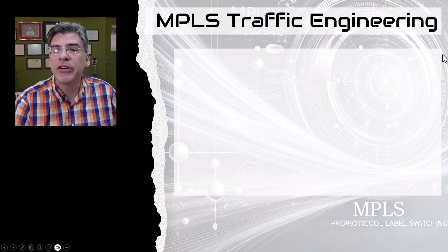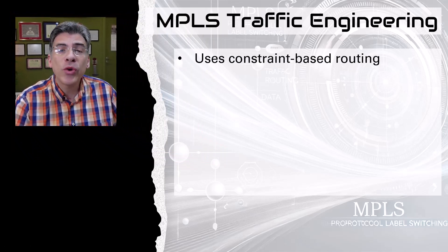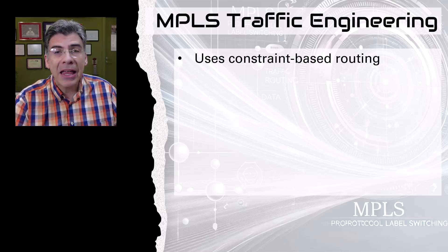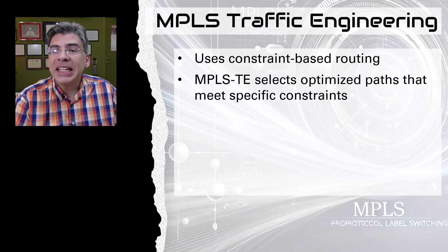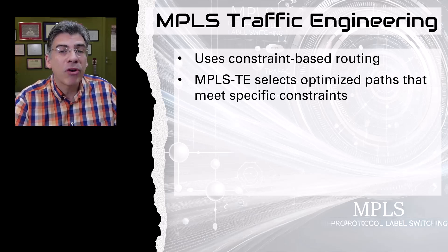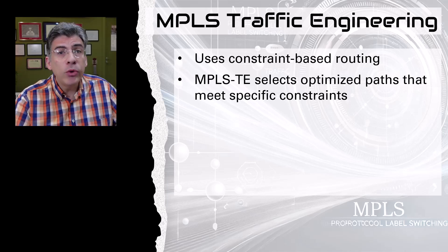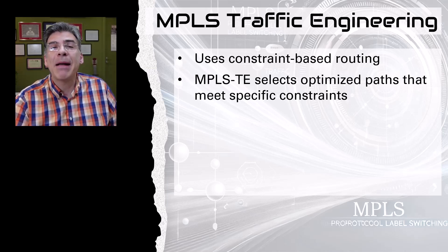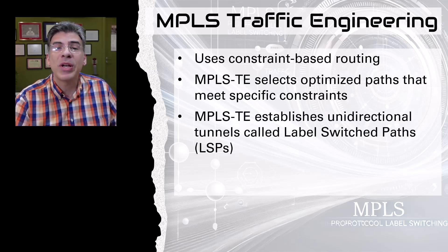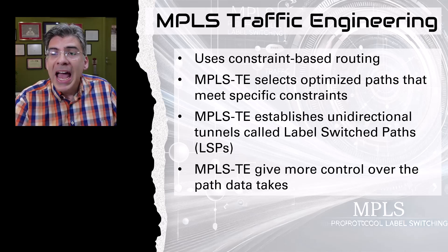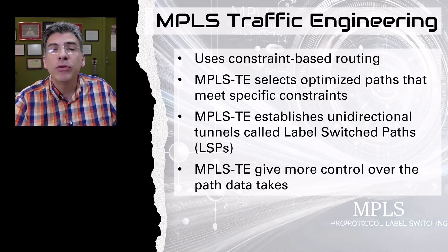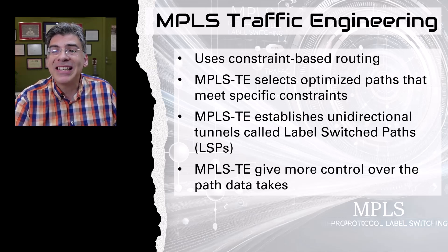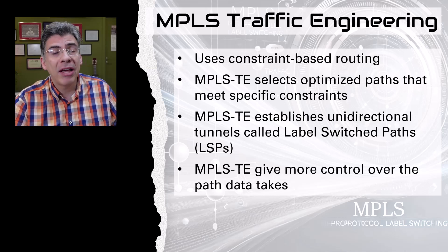As we have seen in the last couple of videos, MPLS traffic engineering employs a technique called constraint-based routing, which goes beyond traditional shortest path routing. Instead of simply choosing the shortest route, MPLS TE selects optimized paths that meet specific criteria called constraints. To direct traffic along these optimized paths, MPLS TE establishes unidirectional tunnels called label switched paths, giving you much more control to ensure the absolute best use of network infrastructure, bringing efficiencies as near to 100% as possible while maintaining SLAs for quality of service, reliability, and redundancy.